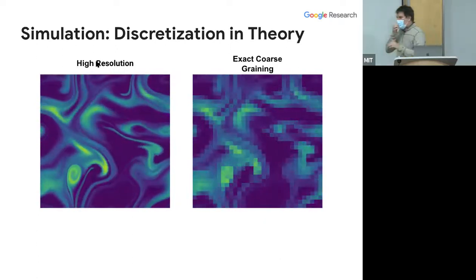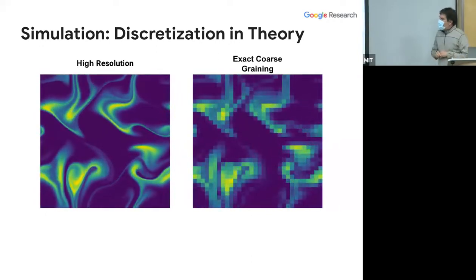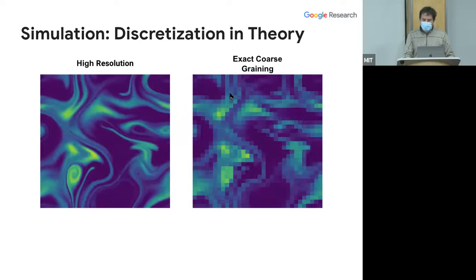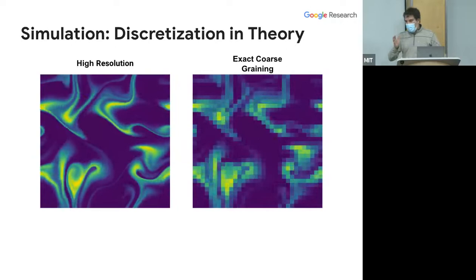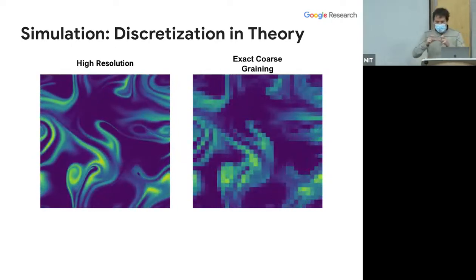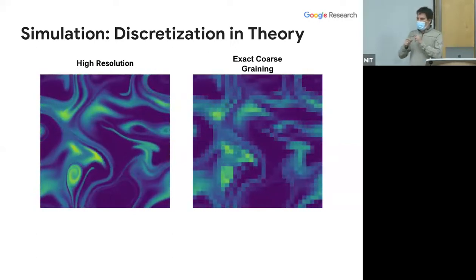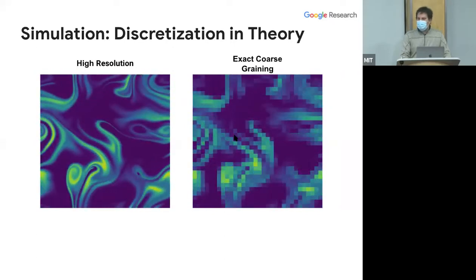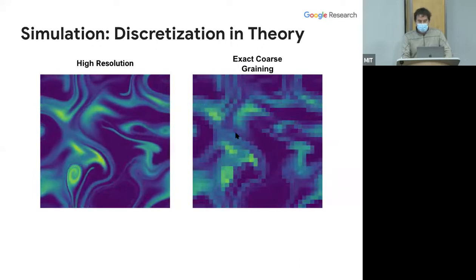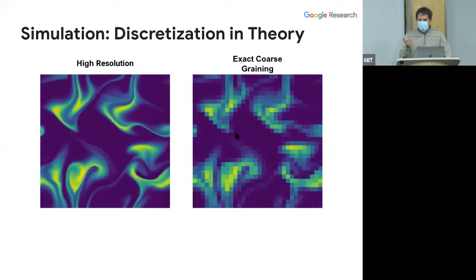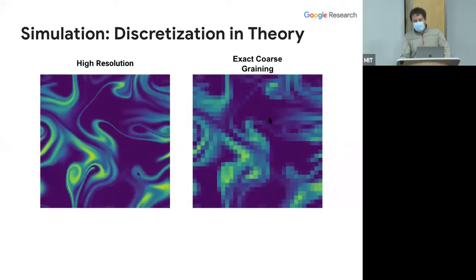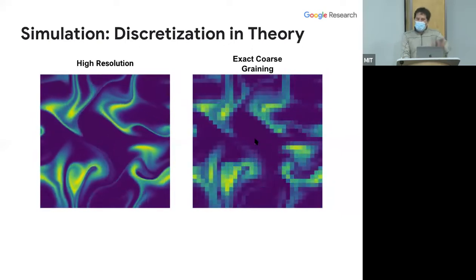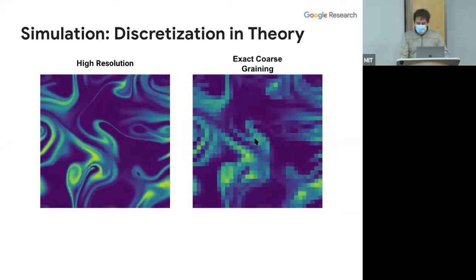The methods are equation-specific, which is a cost, but actually if you take all of MIT and list the equations people care about, it's not that long. So methods that work well for those equations would be pretty great for engineering. The prediction problem: given a high-resolution simulation of a scalar in turbulent flow, I want to solve the PDE on a coarse mesh and have it agree with the exact solution averaged onto that coarse mesh over time.